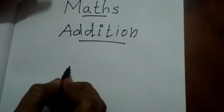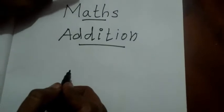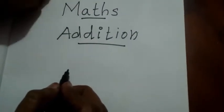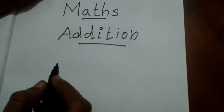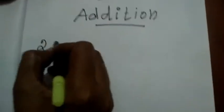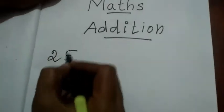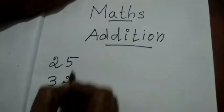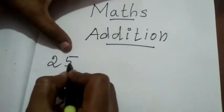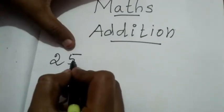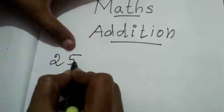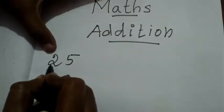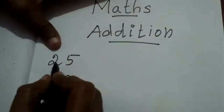I hope last year, when you were in first standard, you learned one-digit addition. Now we are going to learn two-digit addition. For example, 25 plus 32. See the number 25 — the first digit is 1, the second digit is 10. So two digits.